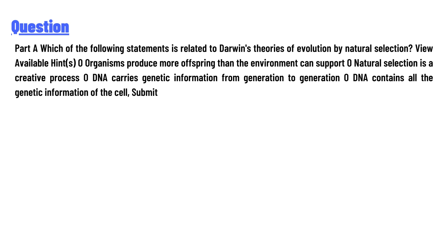The options are: organisms produce more offspring than the environment can support; or natural selection is a creative process; or DNA carries genetic information from generation to generation; or DNA contains all the genetic information of the cell. What is the answer to the question?